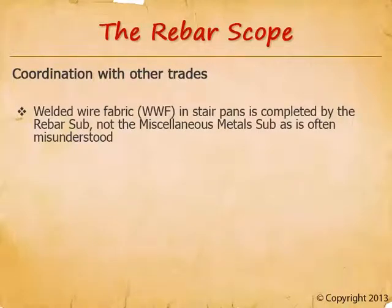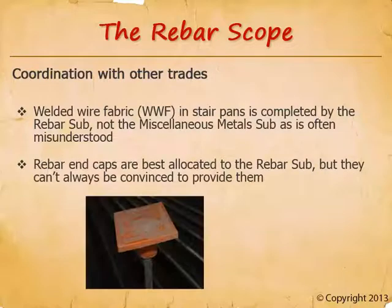Welded wire fabric in the stair pans is completed by the rebar subcontractor, not the miscellaneous metal subcontractor as is often misunderstood. We can't tack the welded wire fabric into place in the shop because when the stairs show up on site, we want to lay two-bys in the pans for construction use, and the welded wire fabric would be in the way. The welded wire fabric is a rebar product, but it might only be found in the metal stair specification — not always on the stair details. The miscellaneous metal sub will exclude welded wire fabric as standard practice, and because rebar subcontractors don't read the metal stair specifications, this commonly becomes a scope bust. Rebar end caps are best allocated to the rebar subcontractor, but they can't always be convinced to provide them — sometimes their insurance company prohibits them from taking on this responsibility. The important thing, as always, is to be sure they're covered but not double covered.